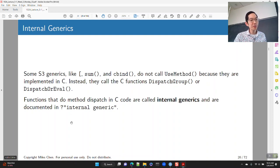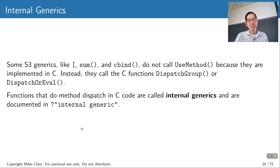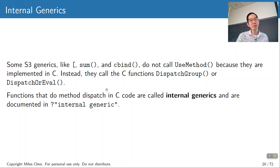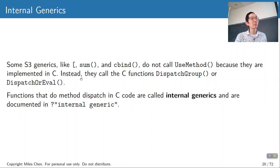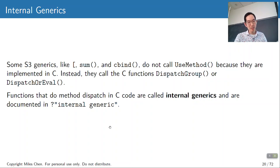There are certain generic functions implemented in C rather than R — things like sum, cbind, and the square bracket used for subsetting. These are internal generics.